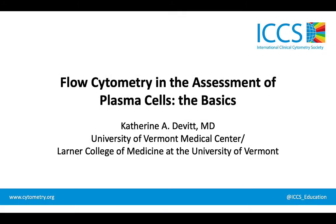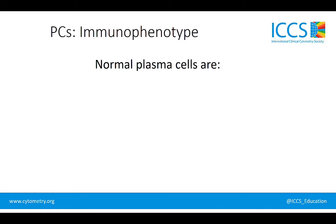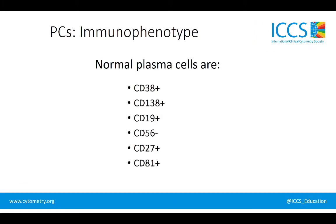Now we can't talk about plasma cell flow cytometry without talking about immunophenotypes, so let's review what a normal plasma cell should express. Normal plasma cells are CD38 and CD138 bright. They are also positive for CD19, negative for CD56, positive for CD27, and positive for CD81.